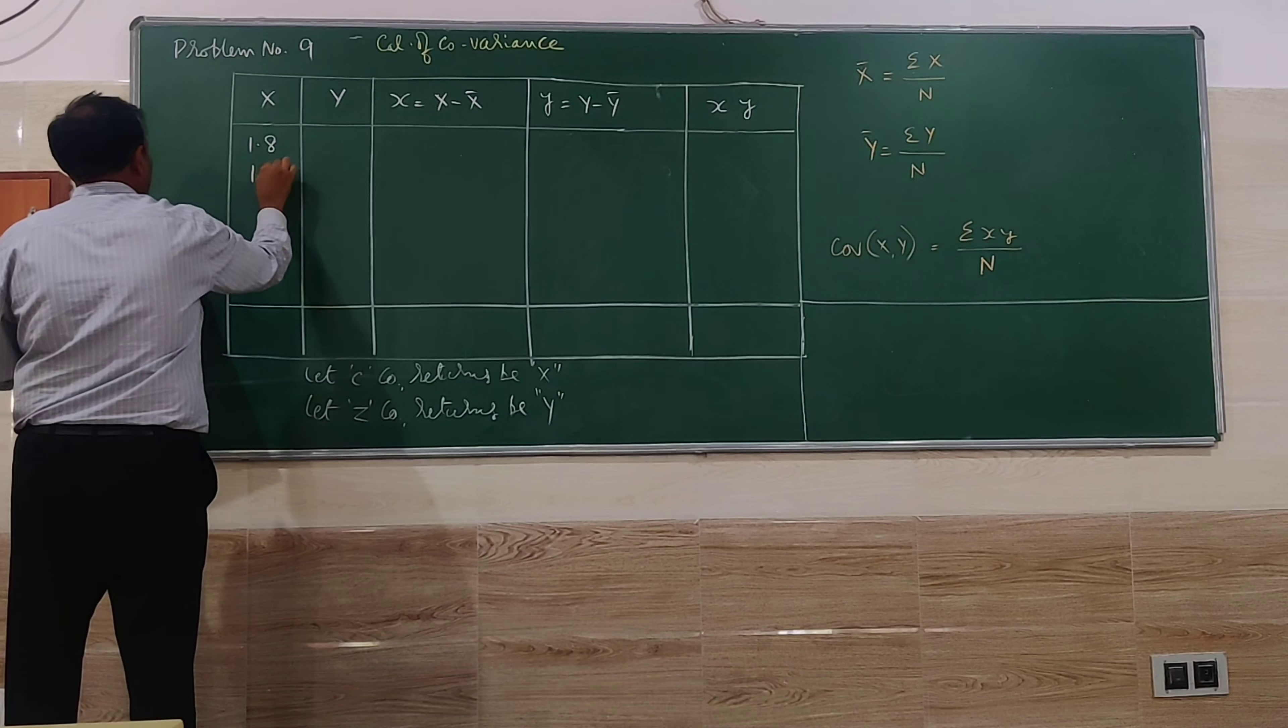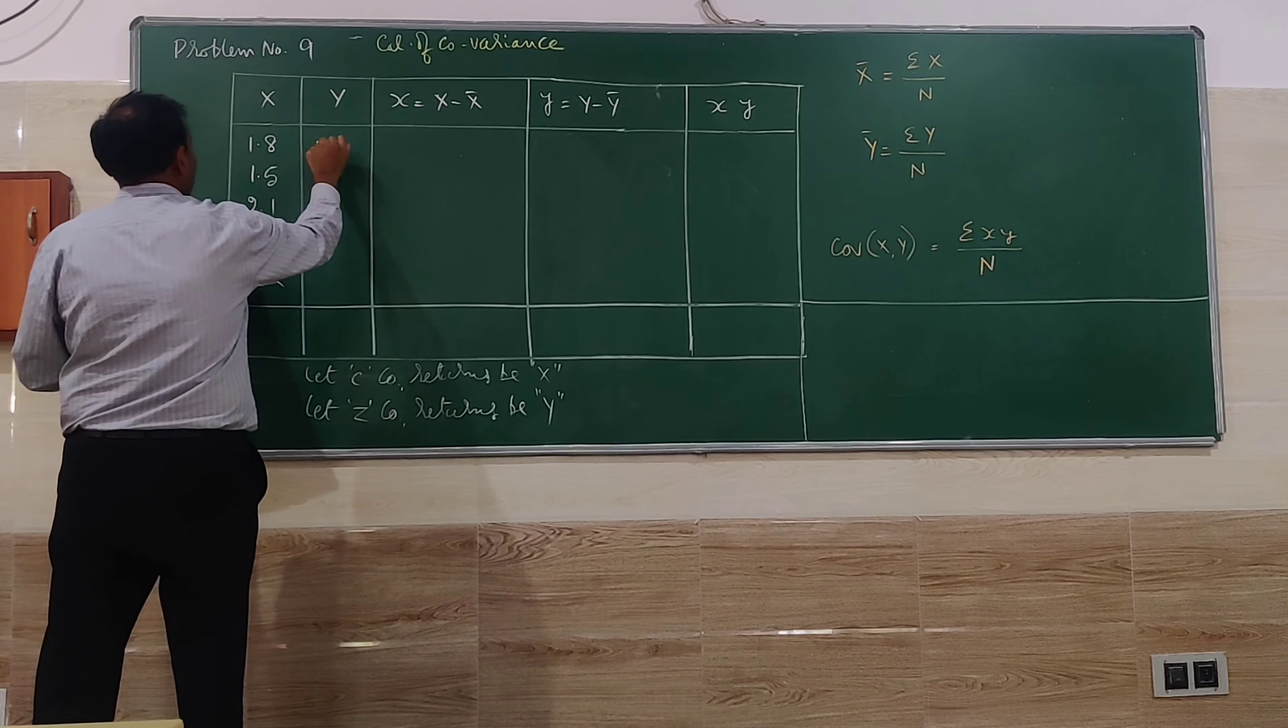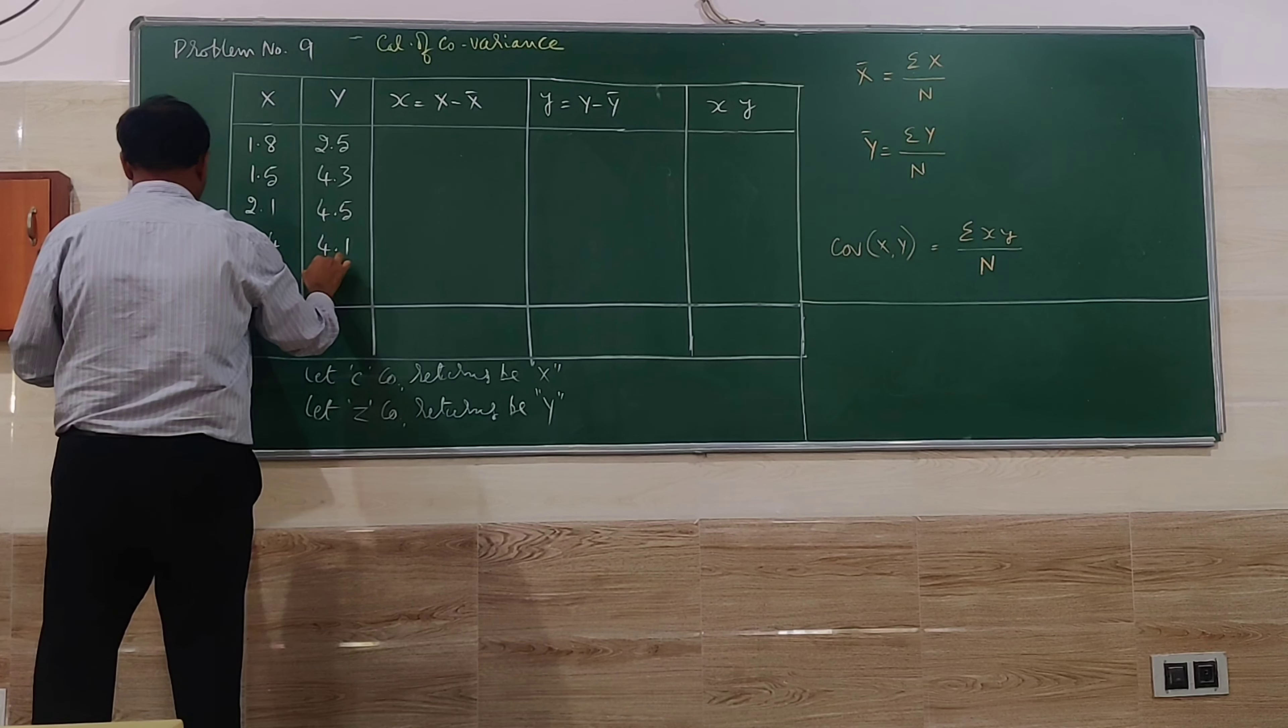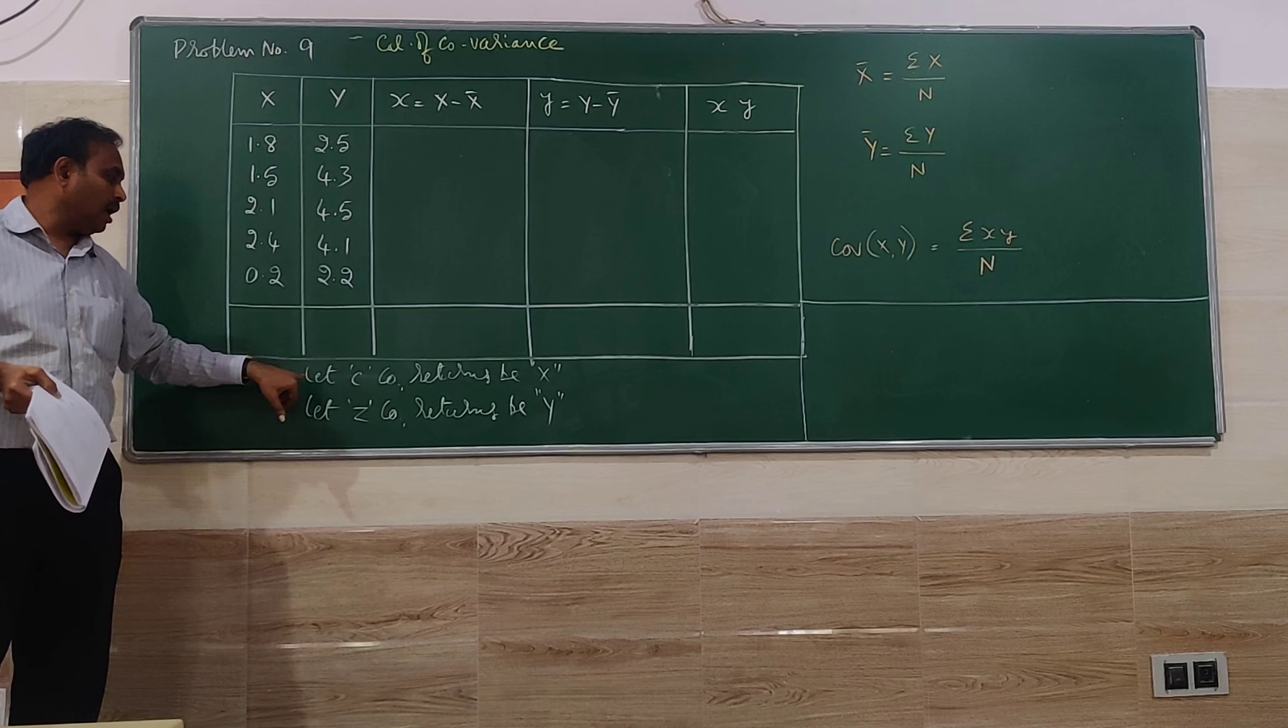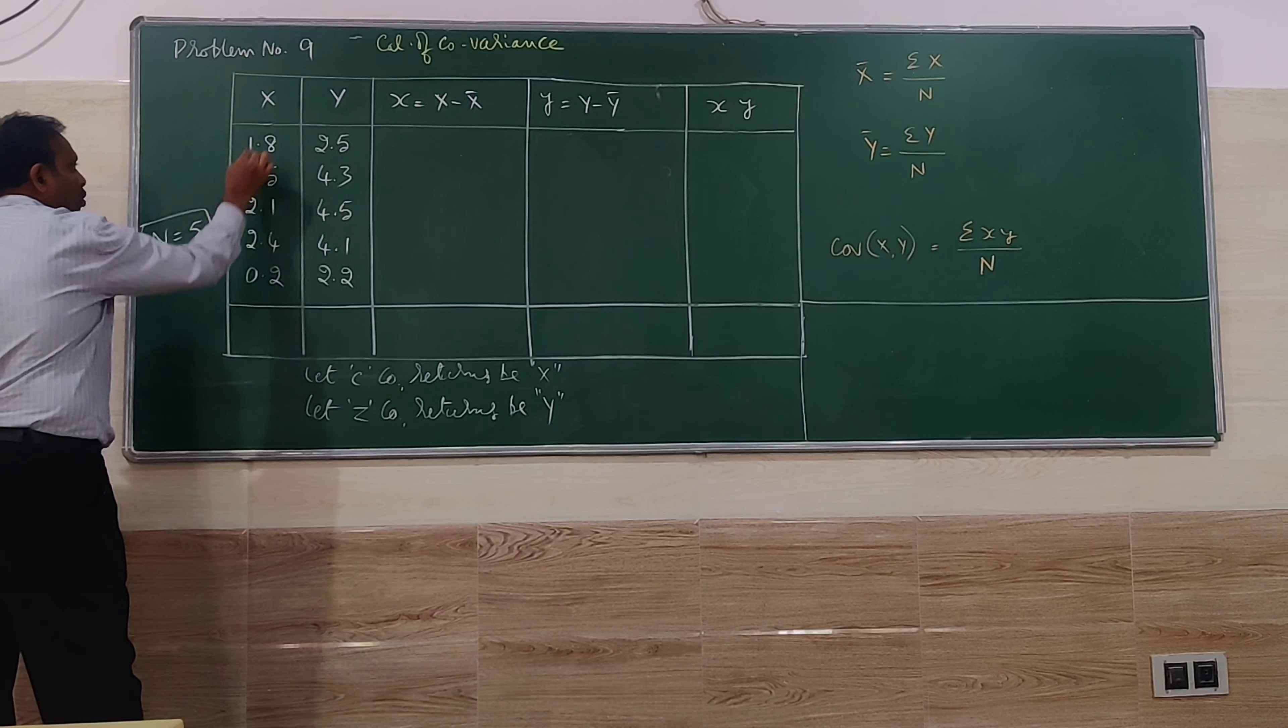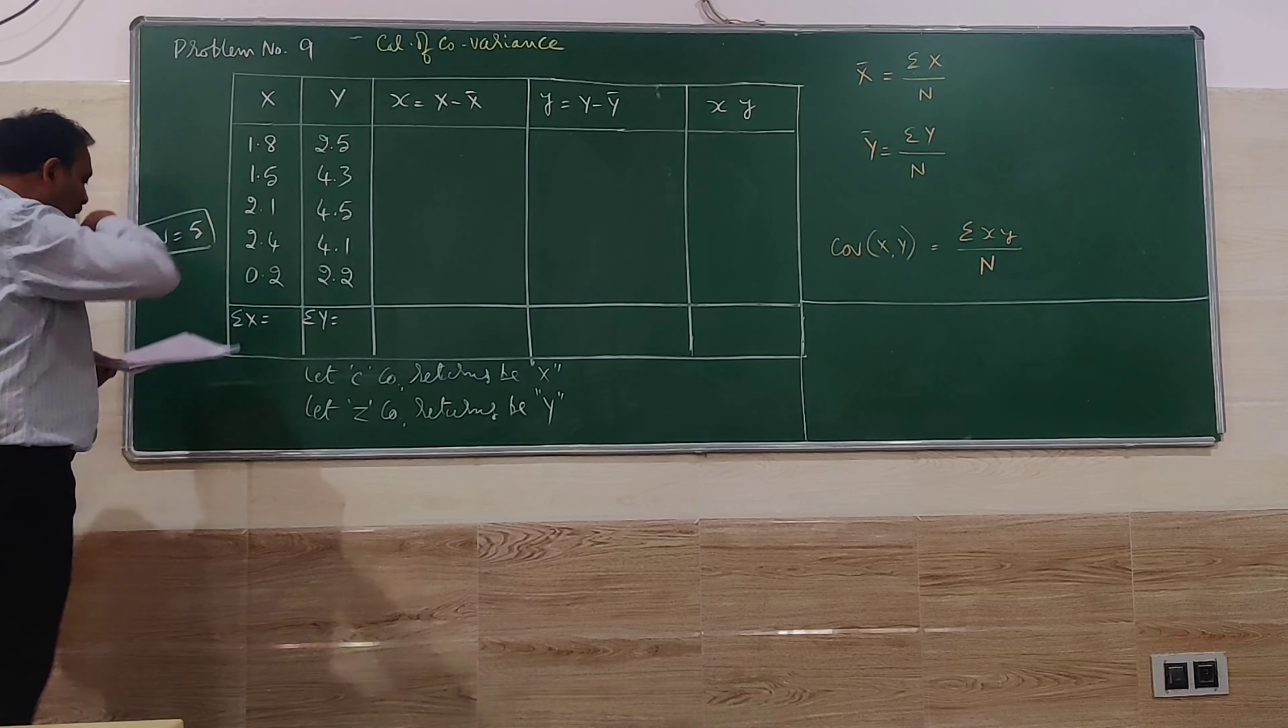For C company, that is X: 1.8, 1.5, 2.1, 2.4, 0.2. For Y, that is Z company: 2.3, 2.5, 4.3, 4.5, 4.1, and 2.2. So I have written the problem as it is. C company returns will be X, Z company returns will be Y. Now first, how many pairs are there? There are five pairs, so N is equal to 5. Then go for totaling of X column as well as the total of the Y column.